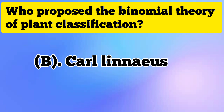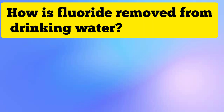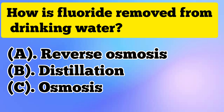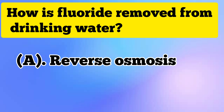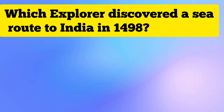Answer: Carl Linnaeus. How is fluoride removed from drinking water? Answer: Reverse Osmosis. Which explorer discovered a sea route to India in 1498?